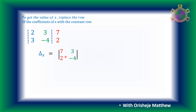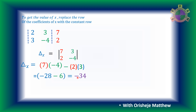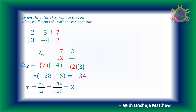Finding the determinant: 7 multiplied by negative 4 gives us negative 28, subtract 2 multiplied by 3 which is 6. So we have negative 28 minus 6, giving us negative 34. That is delta x. So we can find the value of x by dividing delta x by delta naught: negative 34 divided by negative 17, giving x a value of 2.